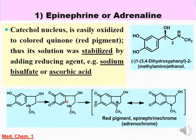أول ممبر هنشوفه الأبنفرن أو الأدرينالين هو عبارة عن catechol isanol N-methyl amine. الـ catechol moiety ده بيتأكسد آـ easily oxidized into quinone red وده عبارة عن red pigment. لذلك zero solutions of epinephrine بيتستابليز بإضافة reducing agents زي sodium bisulfite أو ascorbic acid.